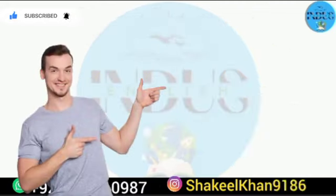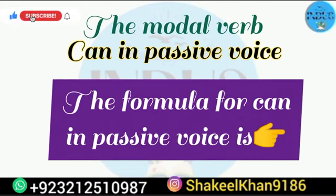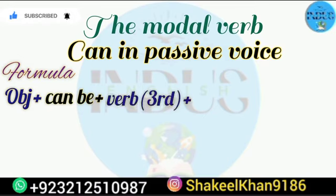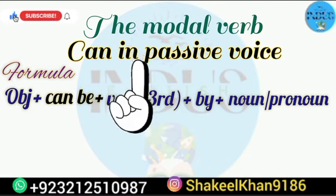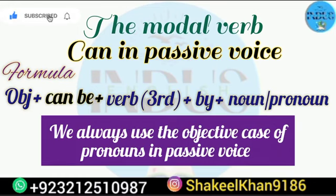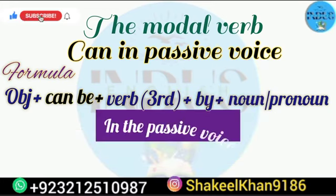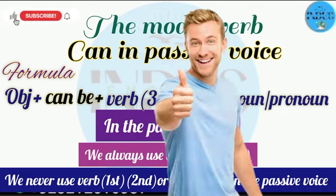In today's video we are going to discuss the modal 'can' in passive voice. The formula for 'can' in passive voice is: object + can be + verb third form + by + noun or pronoun. One important thing to remember: we always use the objective case of pronouns in passive voice — never the nominative or possessive case. We always use the verb's third form in passive voice, never the first, second, or -ing form.